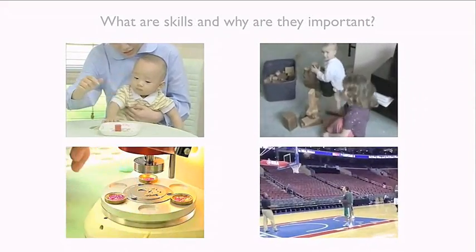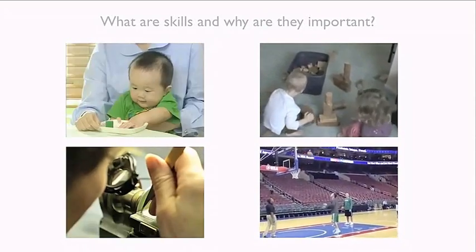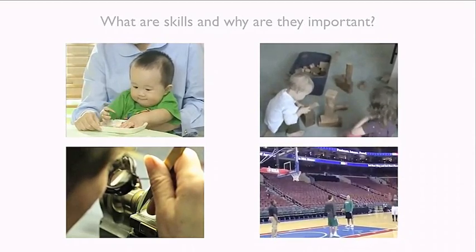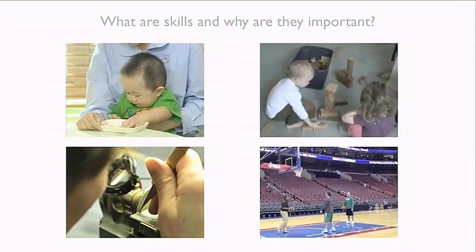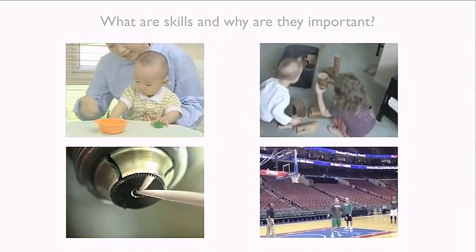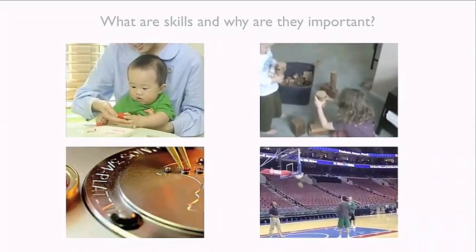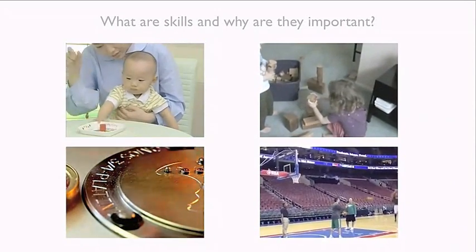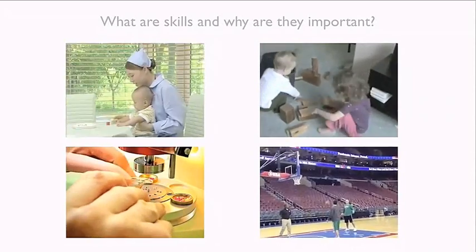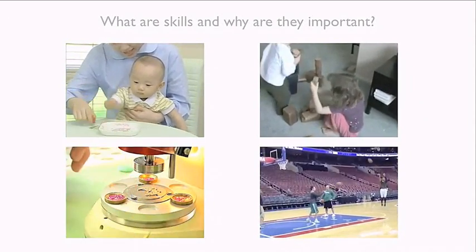This process happens continuously throughout our lives — we build a library of skills and eventually solve really complicated tasks like assembling a watch or playing basketball. The thing all these examples have in common is that a skill for grasping, for example, is not about manipulating any one particular type of object; it's about being able to manipulate different objects with different properties, different shapes and weights — in some sense, solving a family of related problems.